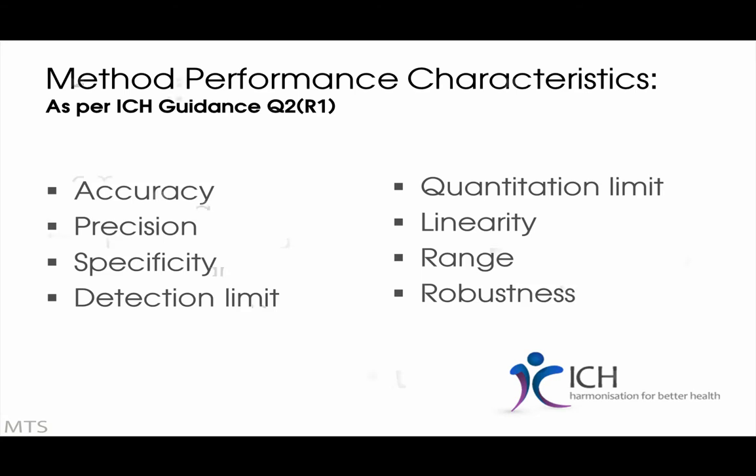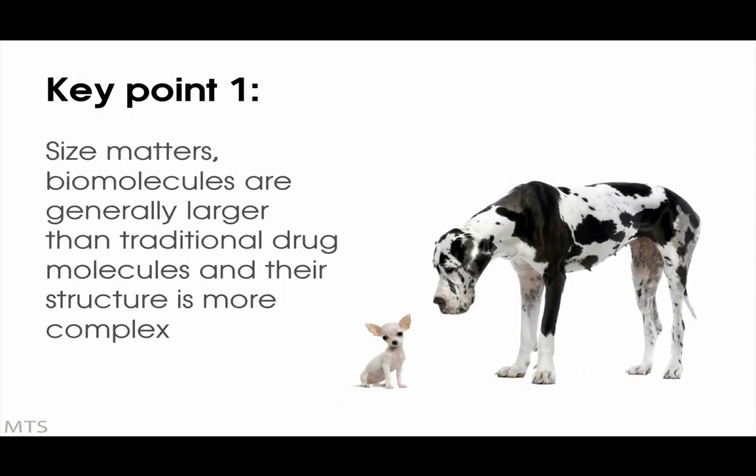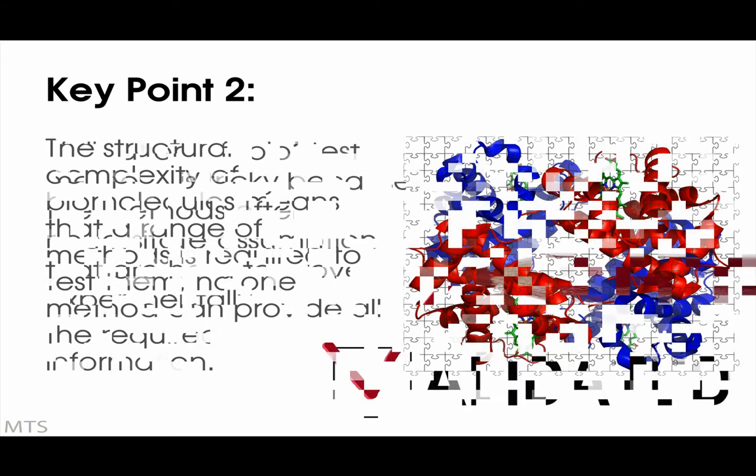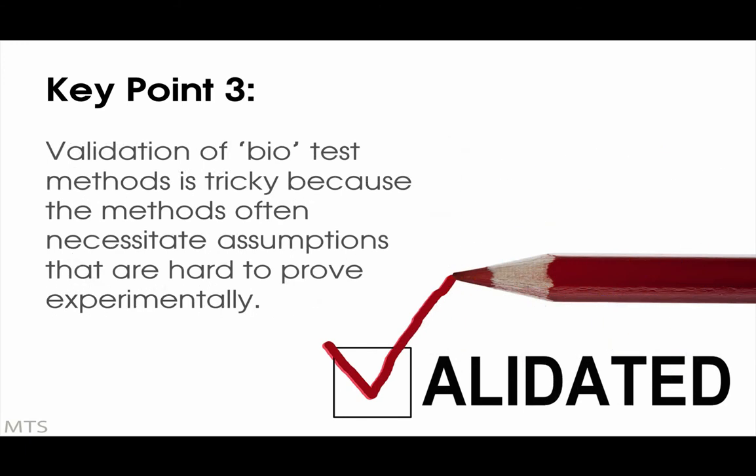Well, number one is that size matters. Biomolecules are generally larger than traditional drug molecules, and thus their structure is more complex. Number two is that the structural complexity of biomolecules means that a range of methods is required to test them. No one method can provide all the required information. And number three is that the validation of biotest methods is tricky because the methods often necessitate assumptions that are hard to prove experimentally.